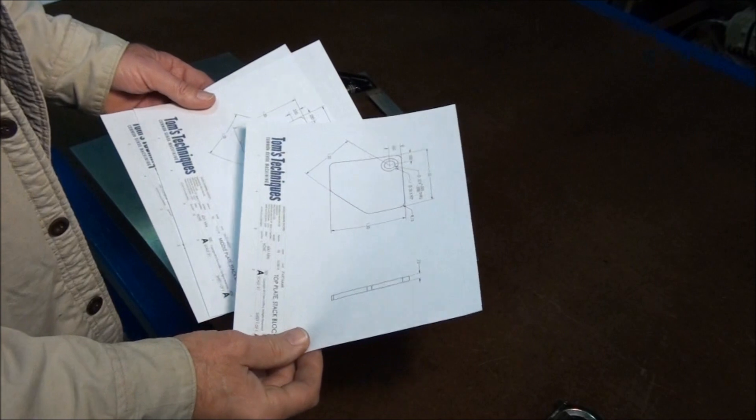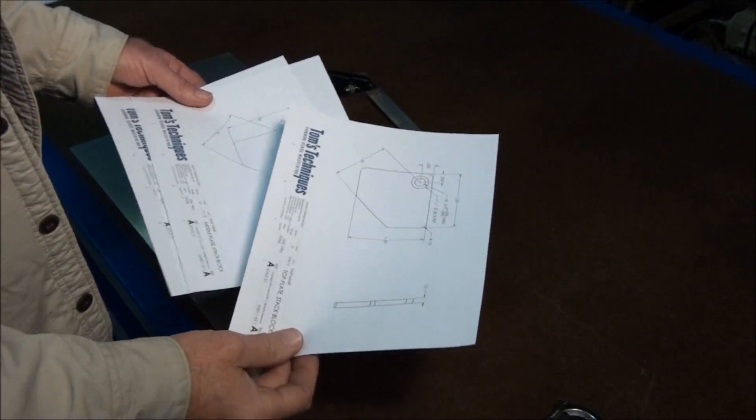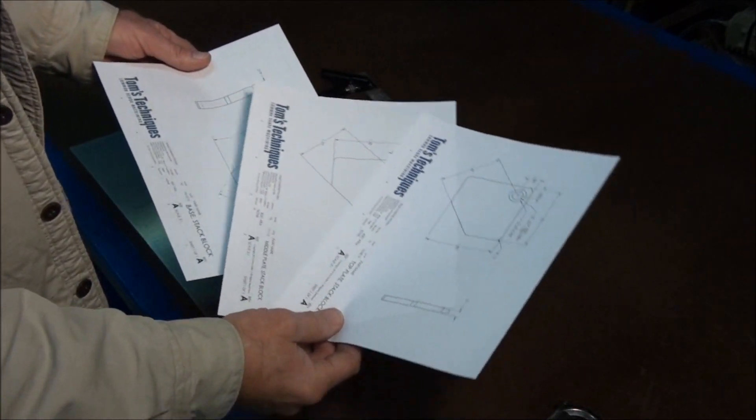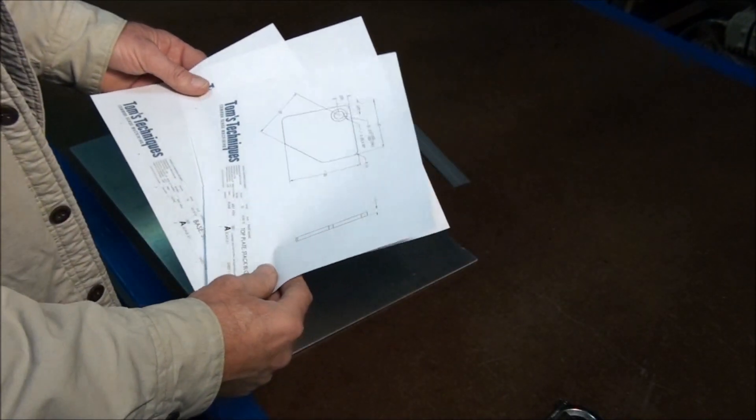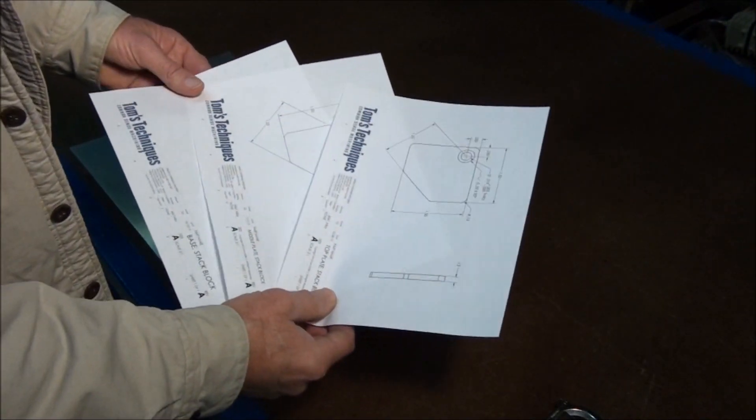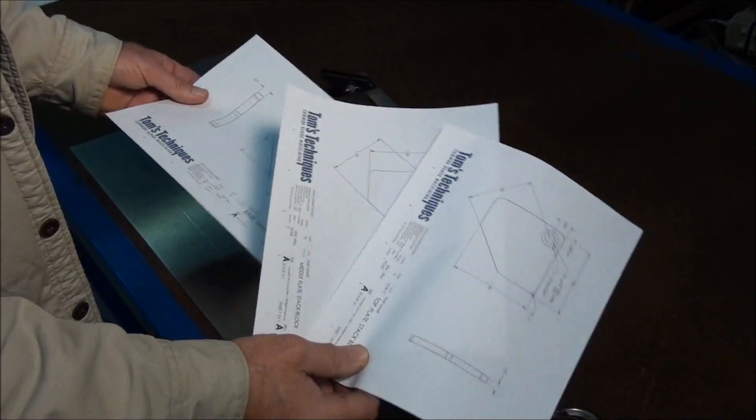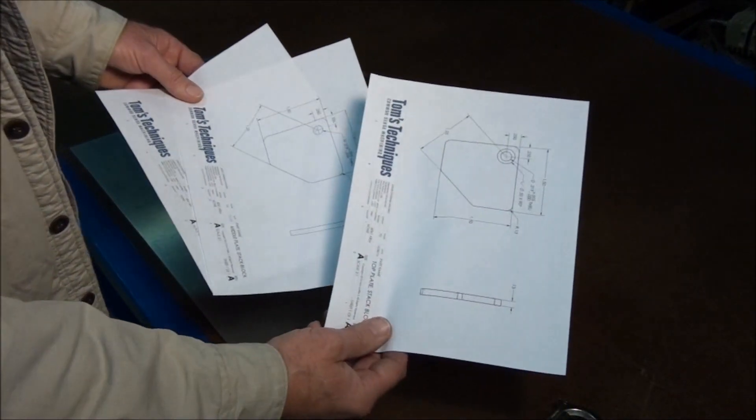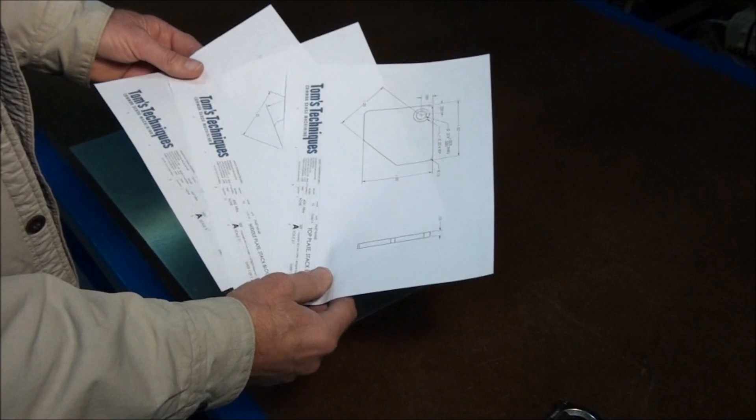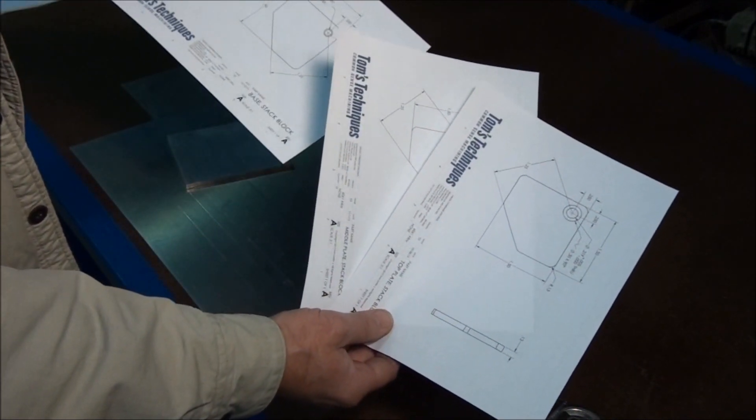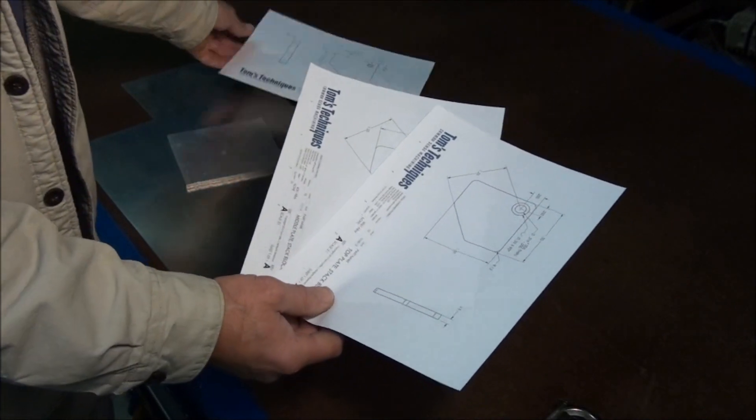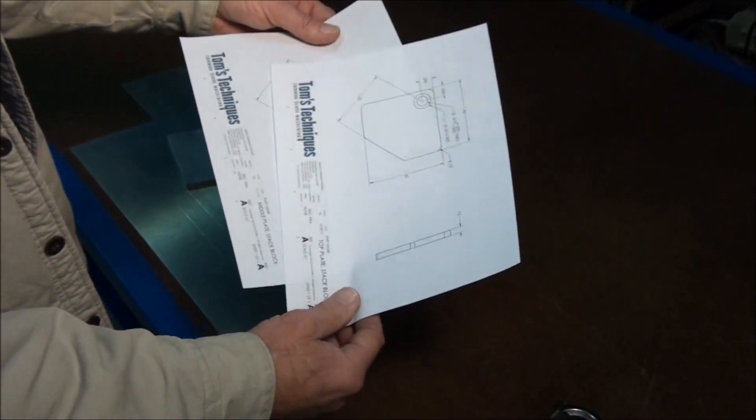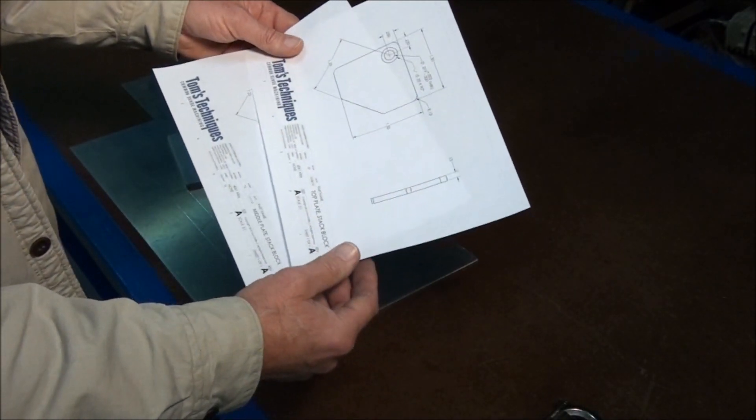First task on the list is to saw out the stock for all these flat parts and square them up. Let's look at the three parts here that are very similar. We have two of them that are 1⅛ inch thick, so we'll group those together, and one of them that's 219 thousandths thick. We'll set that aside for now. Let's tackle the ⅛ inch thick ones first and group all those together.